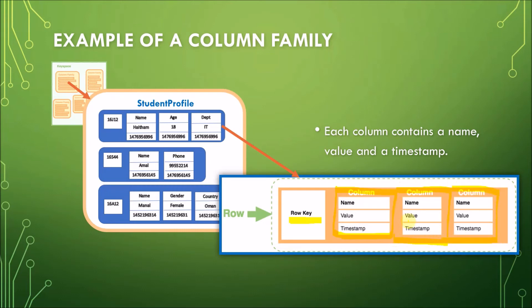Each column contains a name, a value, and a timestamp. And so it goes with the rest of the columns. Name, value, timestamp. Name, value, timestamp. So this is the name. The name is the name of the name-value pair.